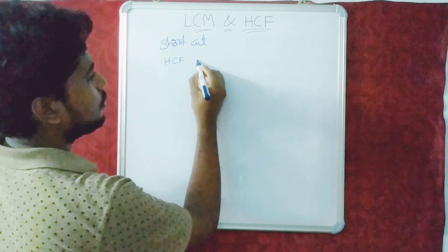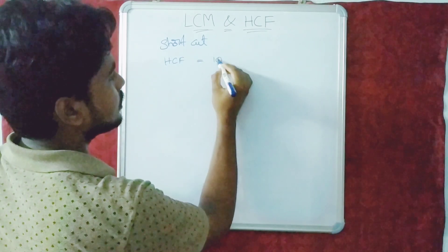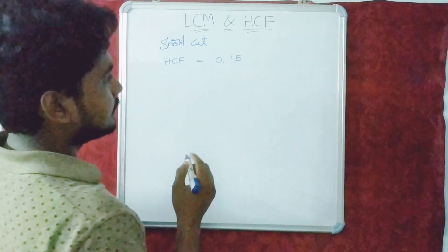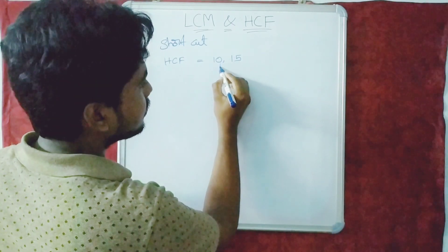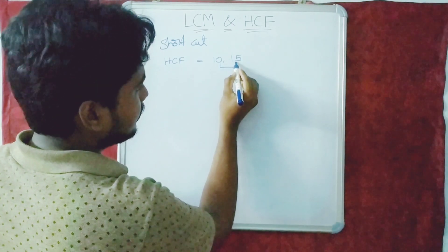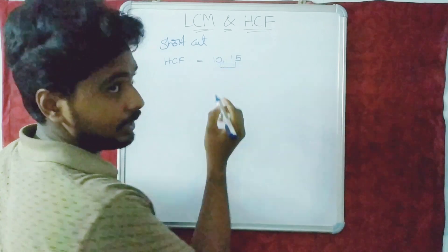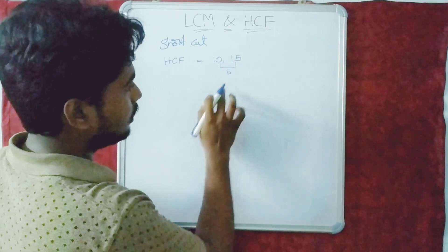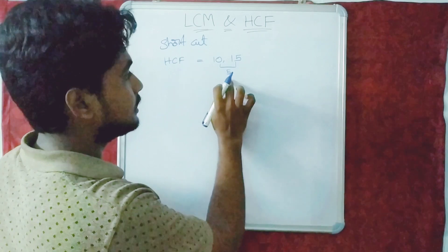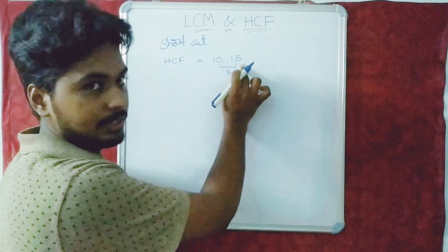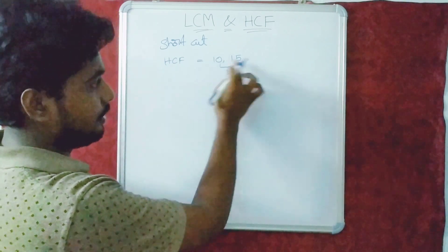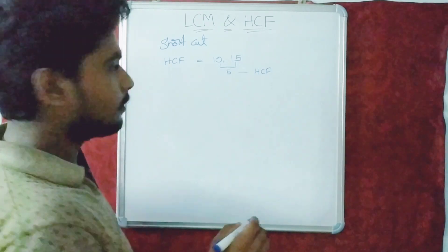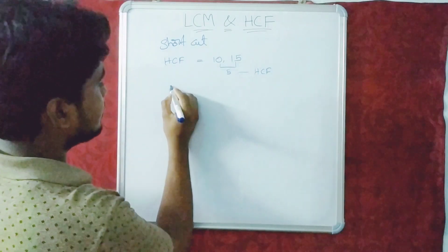HCF of the numbers 10 and 15: it's very simple. Take the difference of 10 and 15, which is 5, and check whether this number divides both numbers. If yes, this will be the HCF.